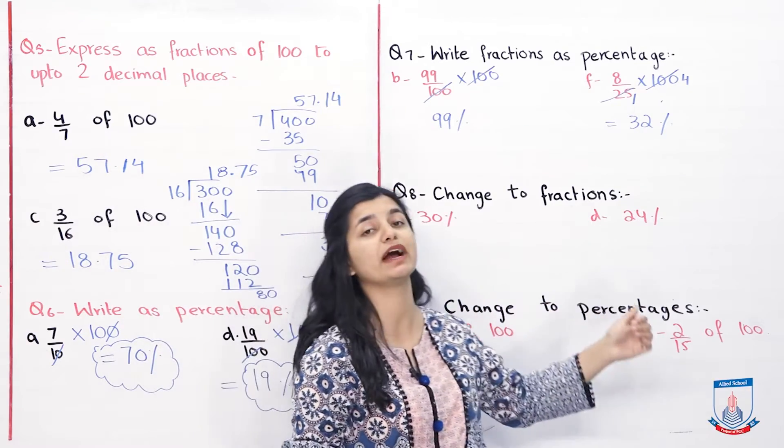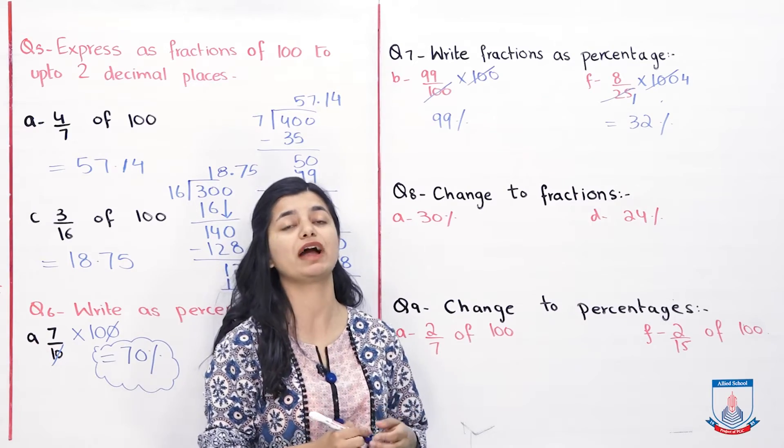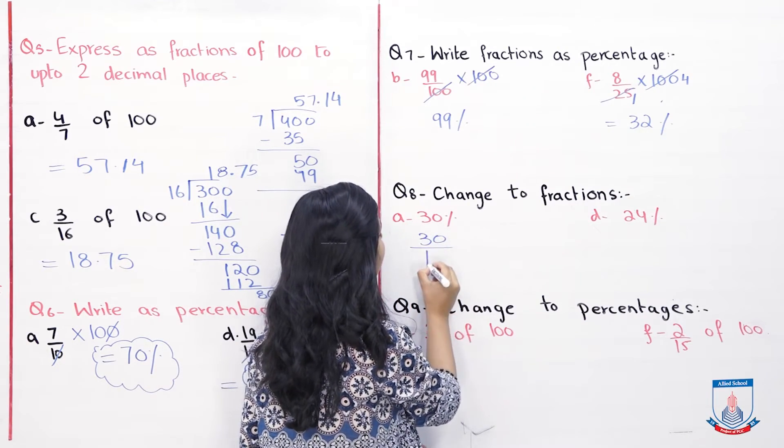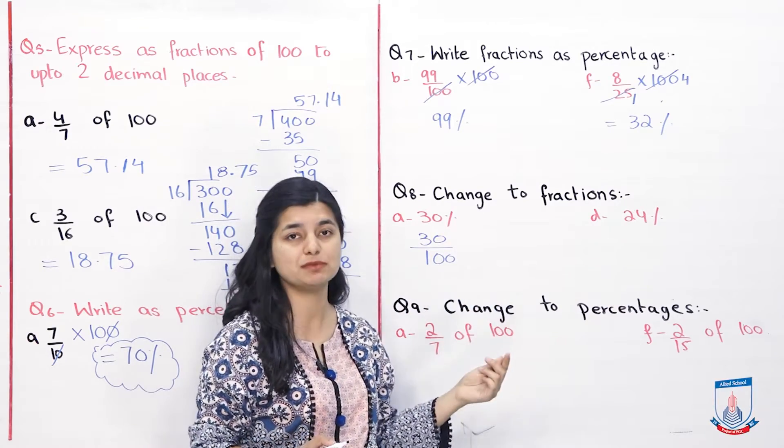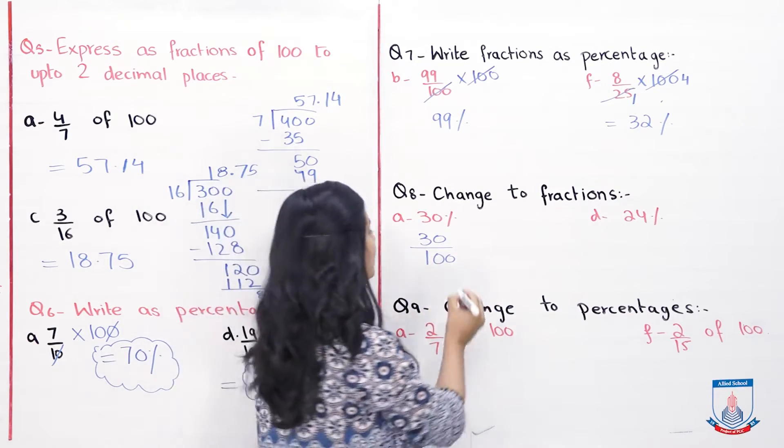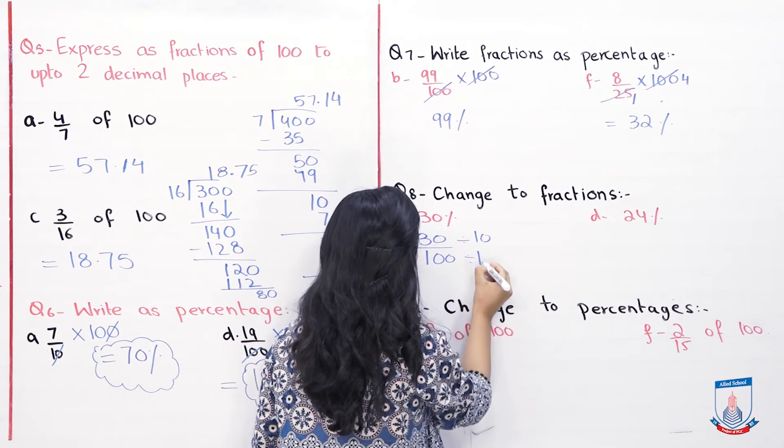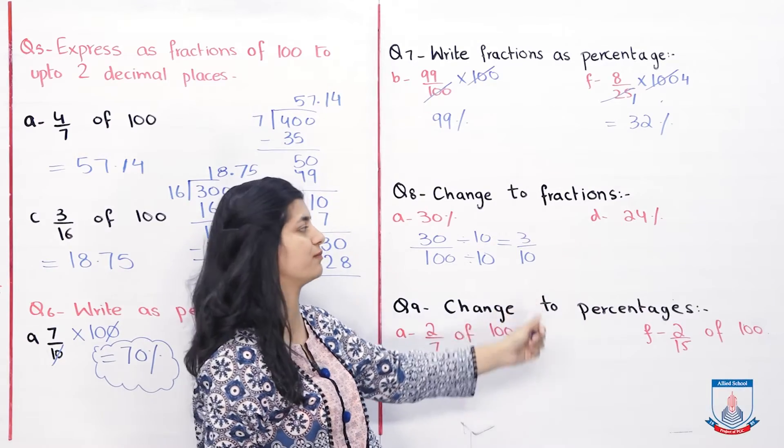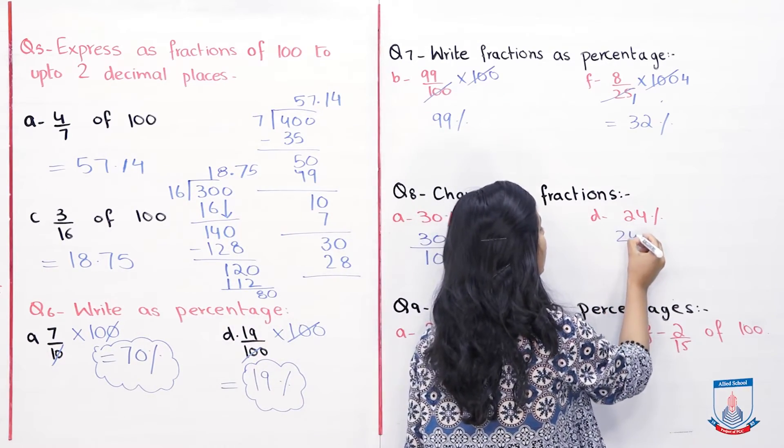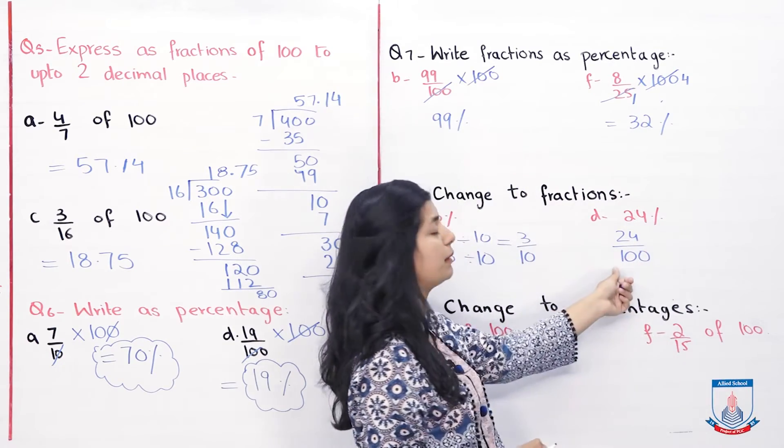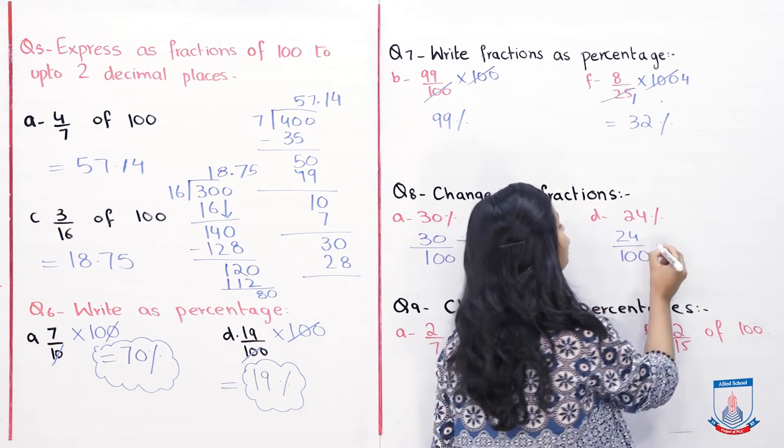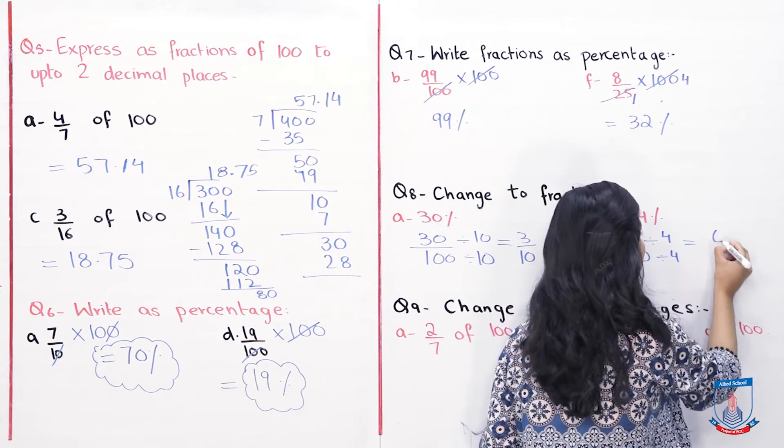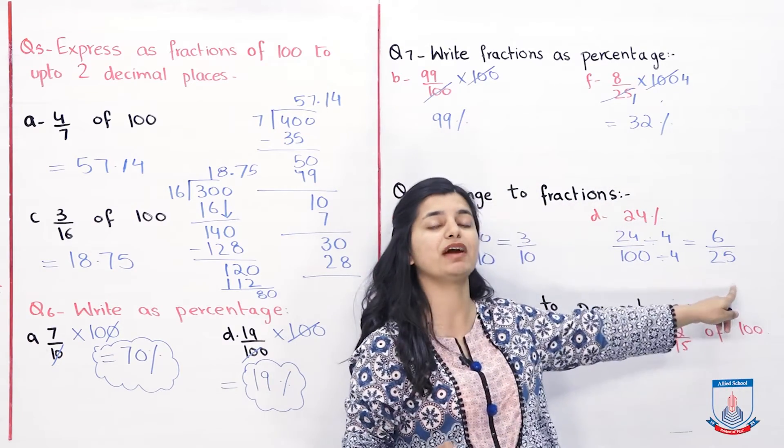Question number 8 hai. Change to fractions. Ab aapne uska ulta karna hai. Ye percentage dee gahi hai, usko fractions mein likh na hai. When you have a percentage you simply write it over 100. Toh 30 over 100, ye aapka javaab to ho hai lekin aap isko lowest term me bhi kar sakte ho. Dono jo hain 10 se divide ho sakte hai. So 30 divide by 10 is 3 and 100 divide by 10 is 10. So your answer is then 3 by 10. D part mein bhi aapne yehi karna hai, 24 ko 100 ke saath aapne denominator bana ke likhna hai. Isko jab aap divide karo ge further simplify karne ke liye, dono divide ho sakte hai kis se? 4 se. Jab aap in dono ko 4 se divide karte ho, 24 divide by 4 is 6 over 25. Aur ye hai aapka simplified form mein javaab.